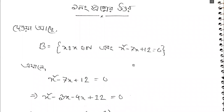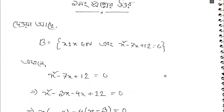We have to look at set B. B is equal to x such that x belongs to N, and x squared minus 7x plus 12 is equal to 0.